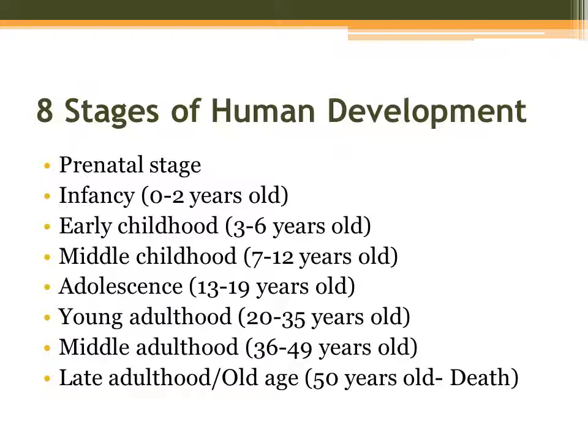The first stage is the prenatal stage, which has at least three phases. Next we have infancy — zero to two years old; early childhood — three to six years old; middle childhood — seven to twelve years old; adolescence — thirteen to nineteen years old; young adulthood — twenty to thirty-five years old; middle adulthood — thirty-six to forty-nine; and later adulthood or old age — fifty years old and beyond.